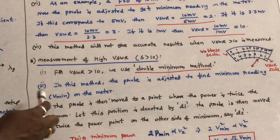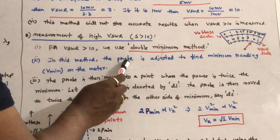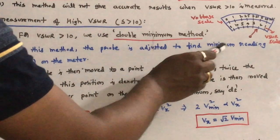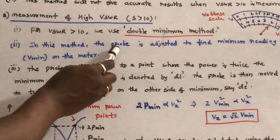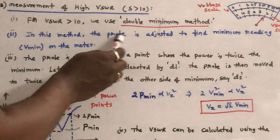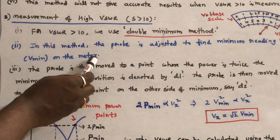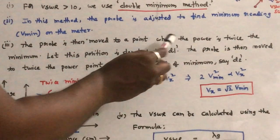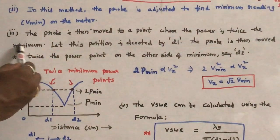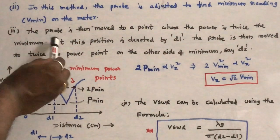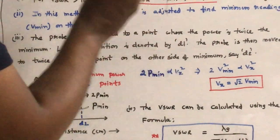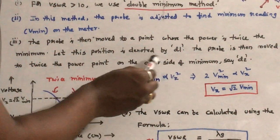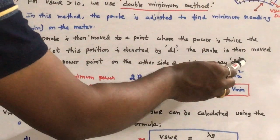In the double minimum method, first the probe is adjusted to find the minimum reading on the meter. The probe is then moved to a point where the power is twice the minimum power — let this position be designated as D1. The probe is then moved to the twice-power point on the other side of the minimum, designated as D2.